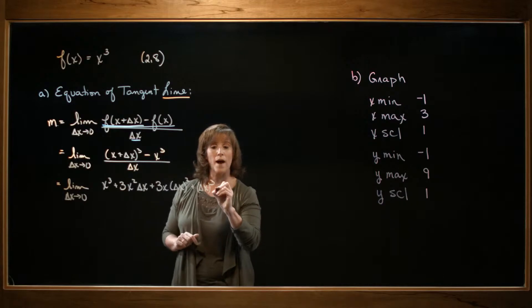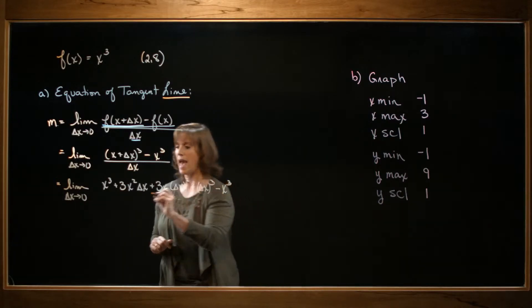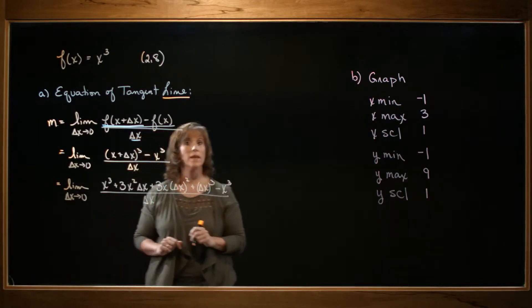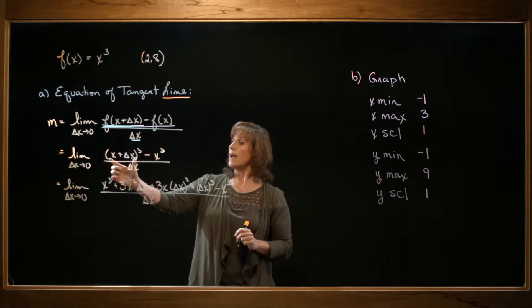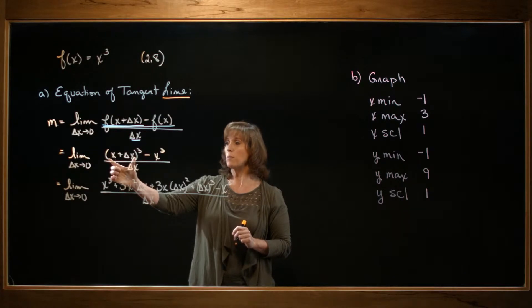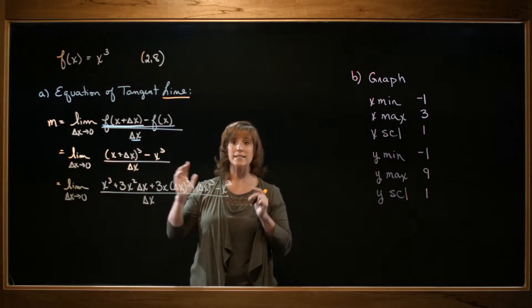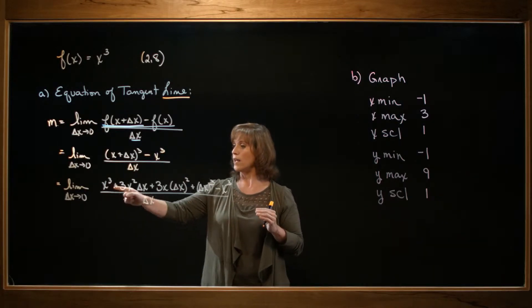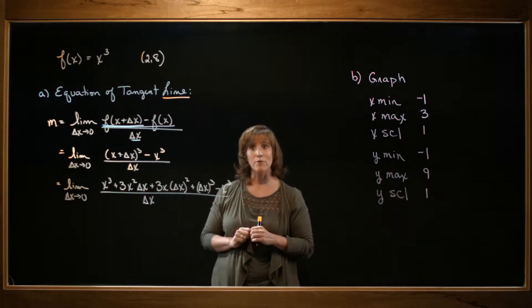plus delta x cubed. I'm then going to subtract my x cubed and divide the whole thing by delta x. Now, if you need to, it's perfectly fine to do a little side work and take that x plus delta x and multiply it by itself three times. The result, though, will be exactly what I have written here.